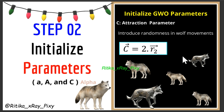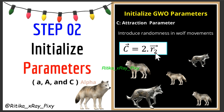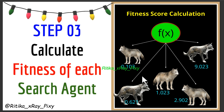The third parameter is C — the attraction parameter. Since we have a virtual environment, this parameter introduces randomness into wolf movement. C = 2 × r2, where r2 is a random value between 0 and 1. Step 3: Calculate the fitness of each search agent. Now we calculate the fitness function for the current position of each wolf to know how good each wolf's position is.